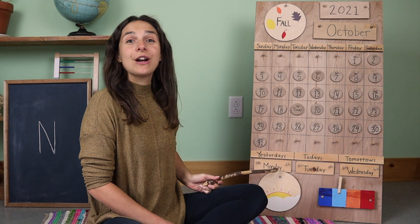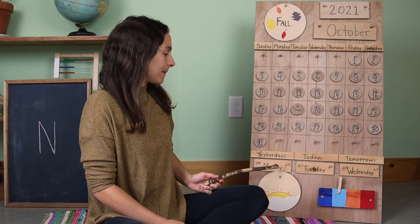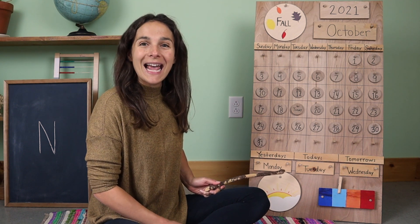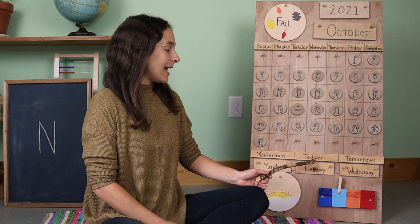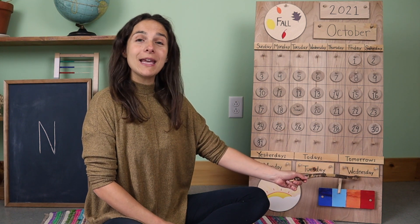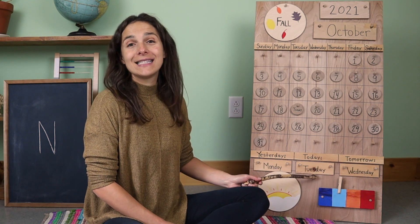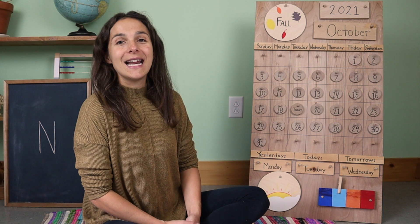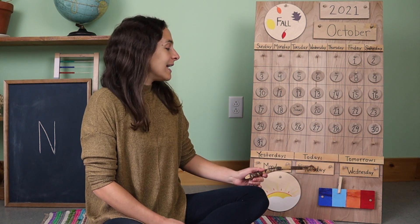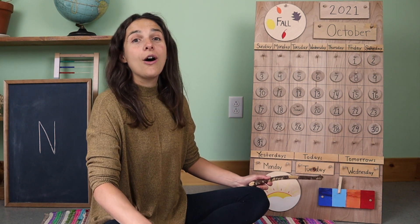Down at the bottom of the chart, we have the days of the week to go over together. Listen carefully for the sound that the day starts with. This says that yesterday was Monday — Monday, the first day of the weekday. That means that today is Tuesday, and tomorrow will be Wednesday. Let's sing: Today is Tuesday, today is Tuesday, today is Tuesday, all day long.